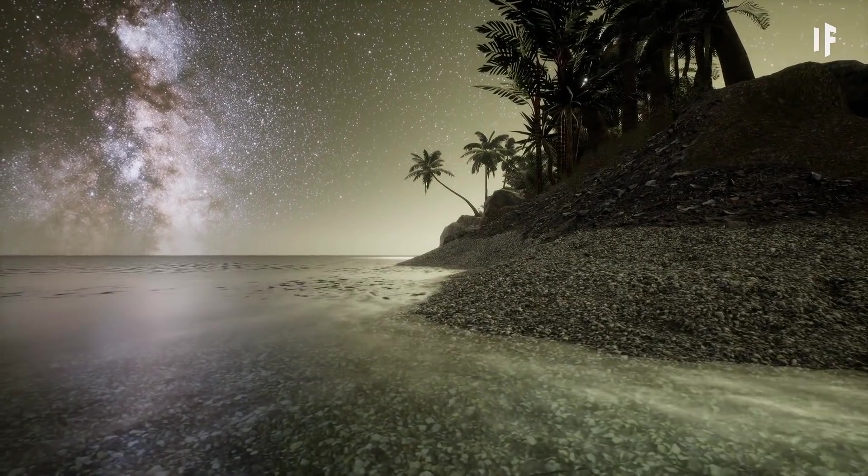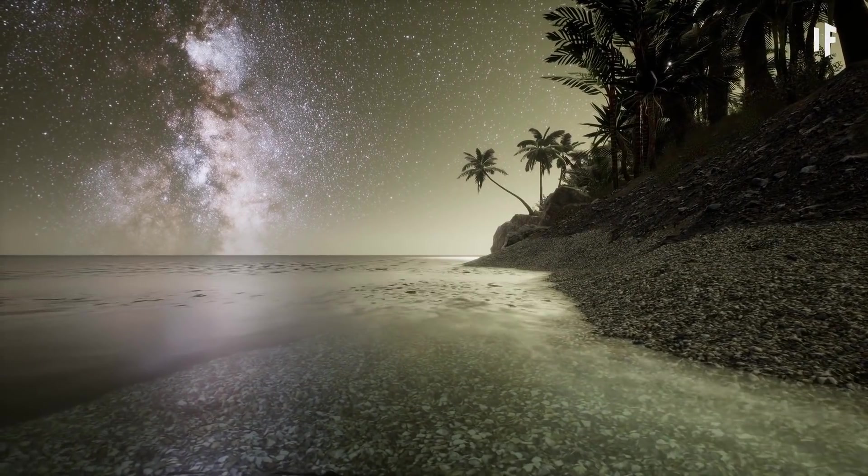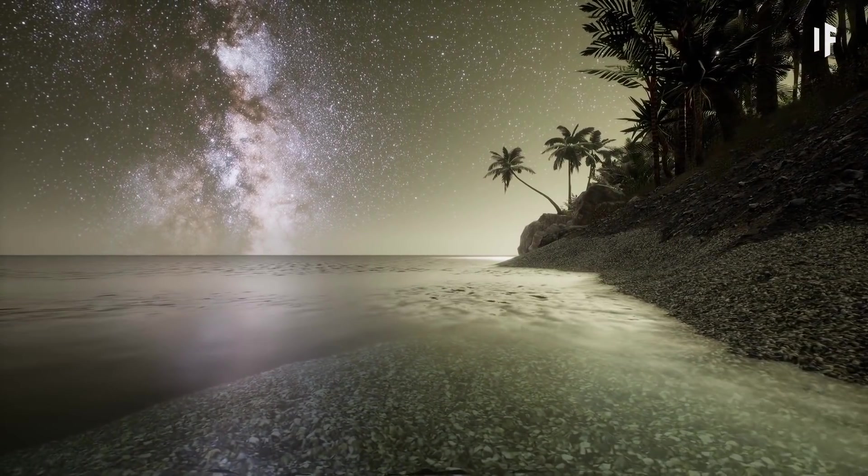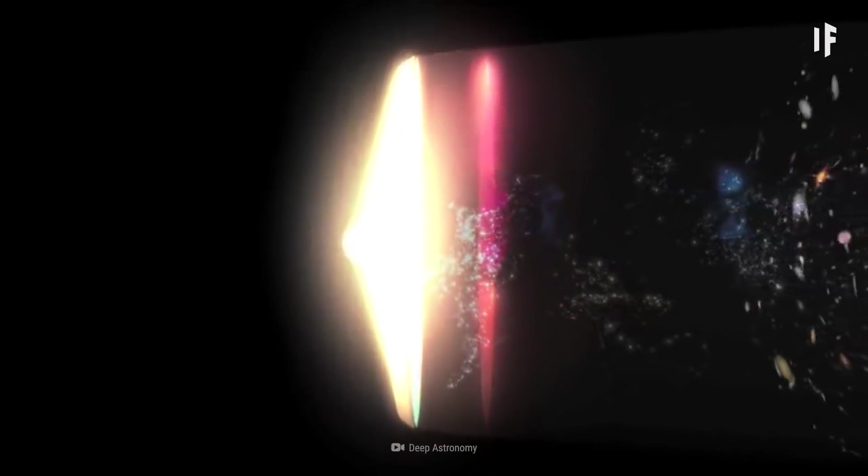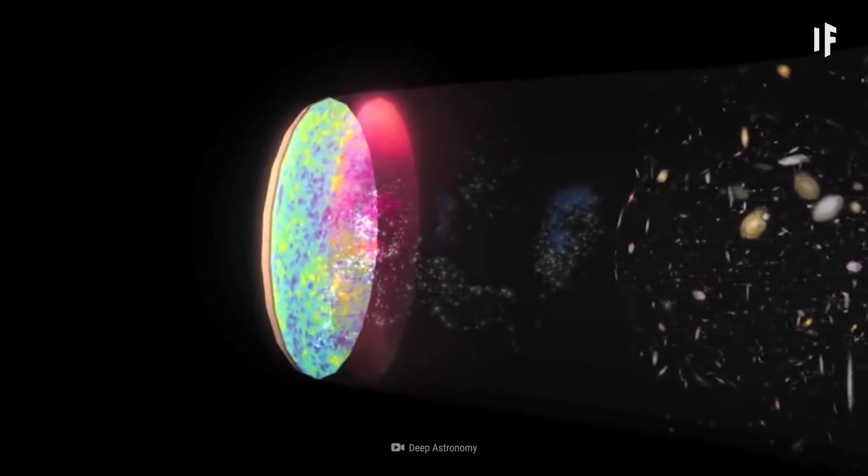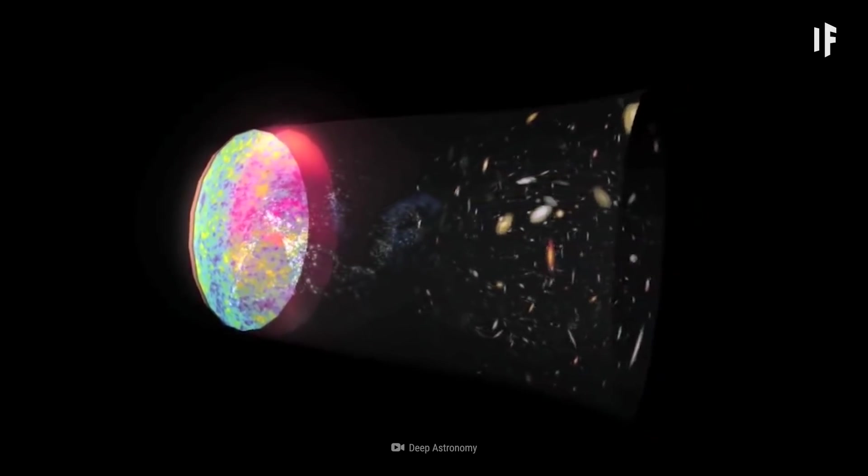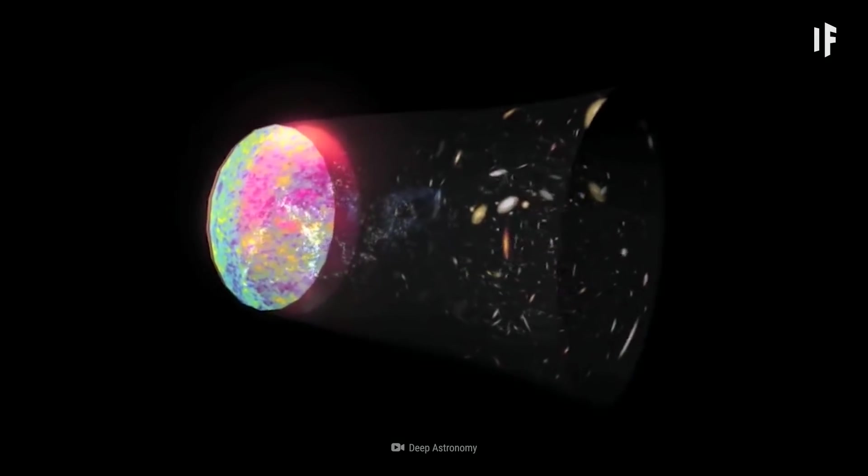But luckily we won't have to worry about that because these galaxies will probably never arrive at the same spot and collide. You see, the Great Attractor is also being pulled deeper into space by other massive clusters. And these 100,000 galaxies are also constantly drifting apart, further away from each other.